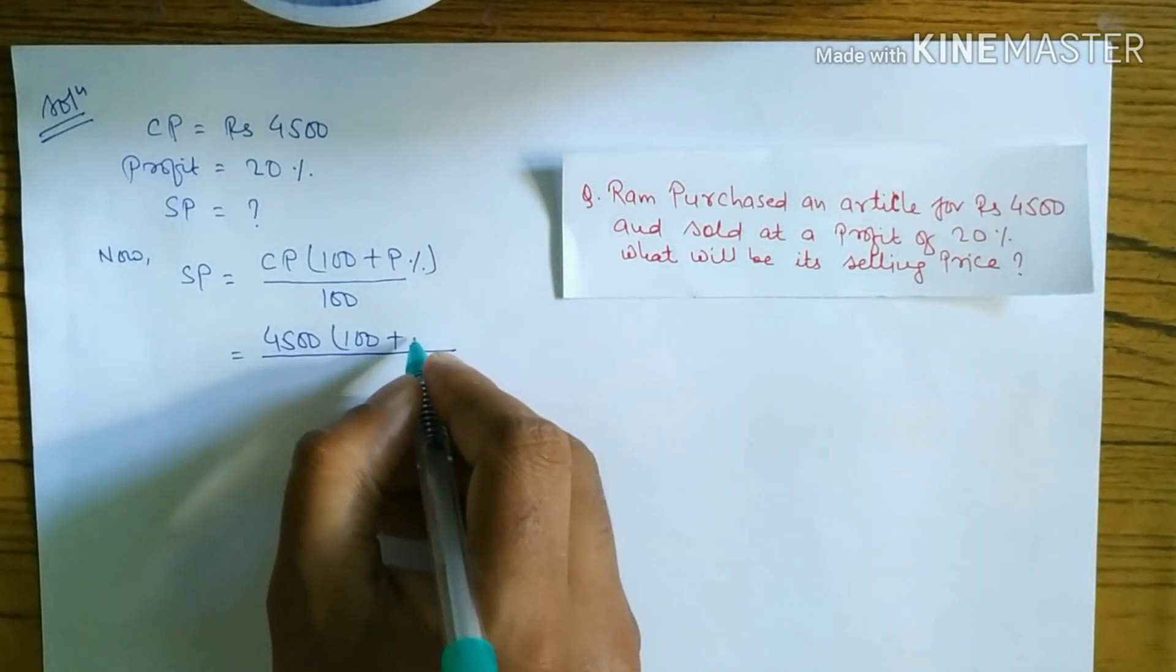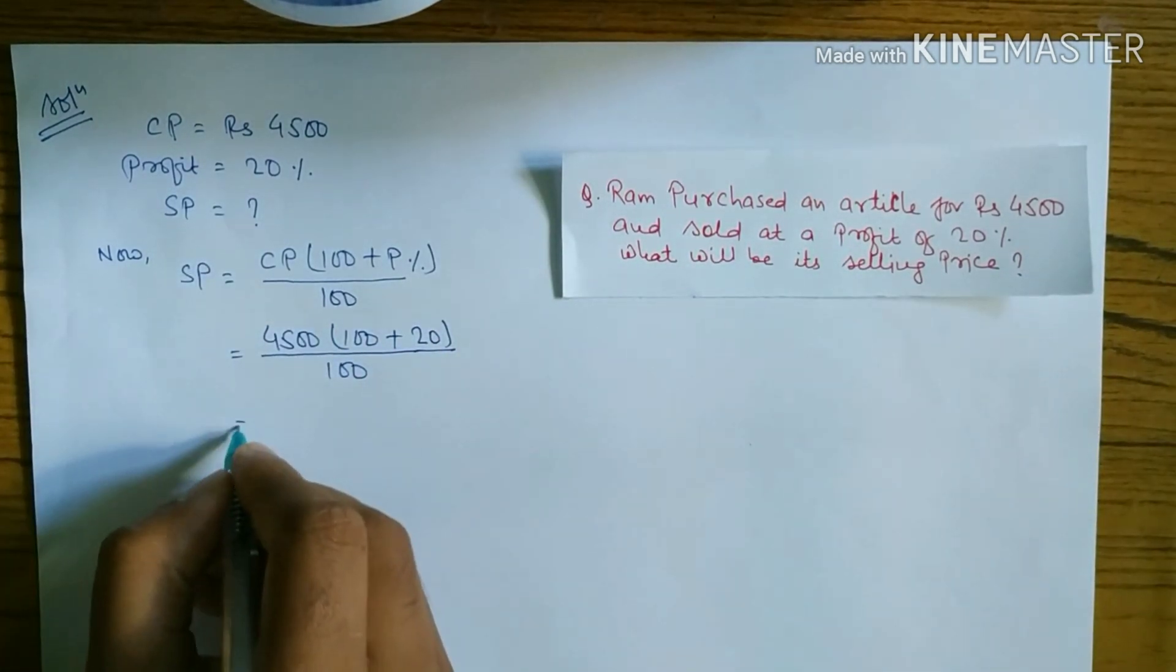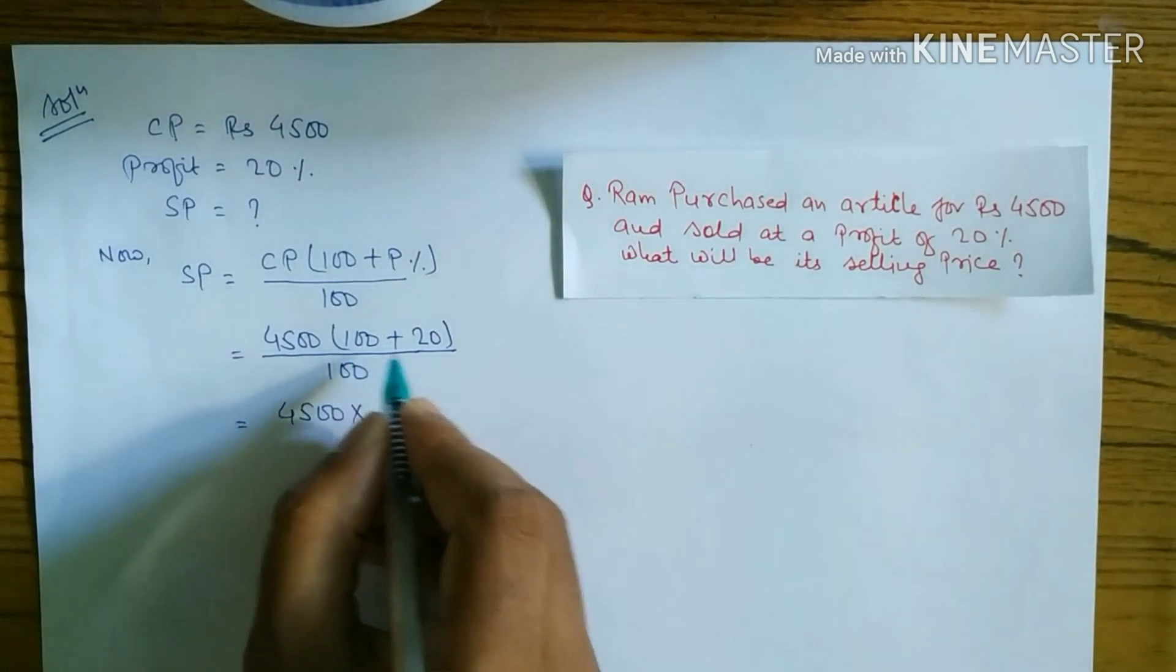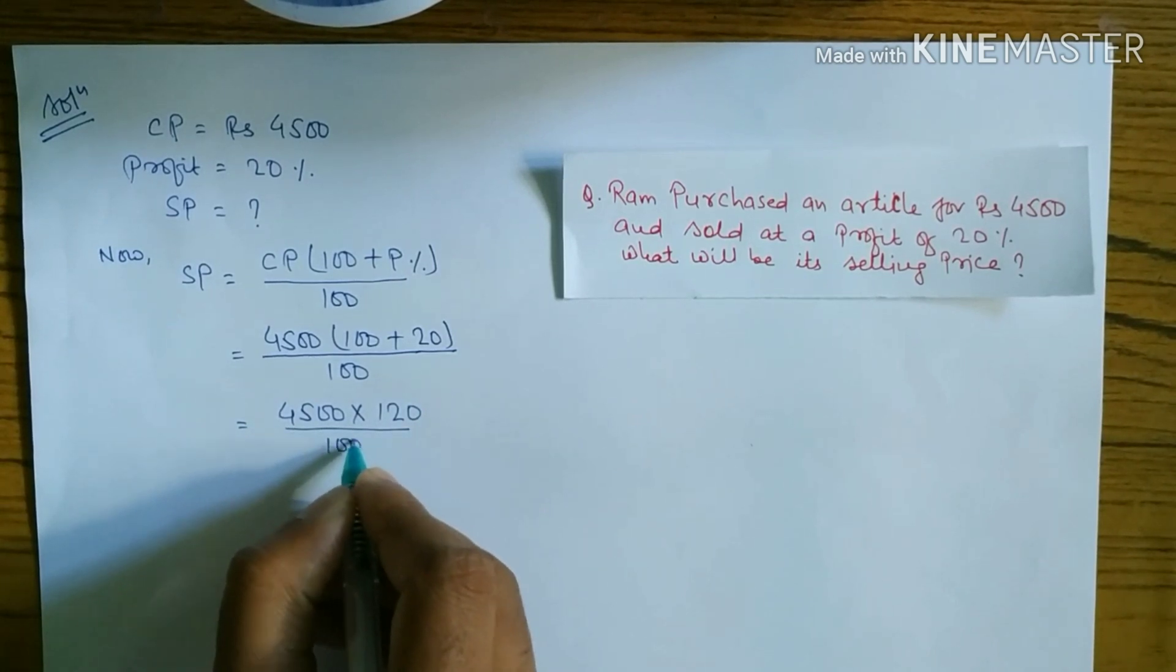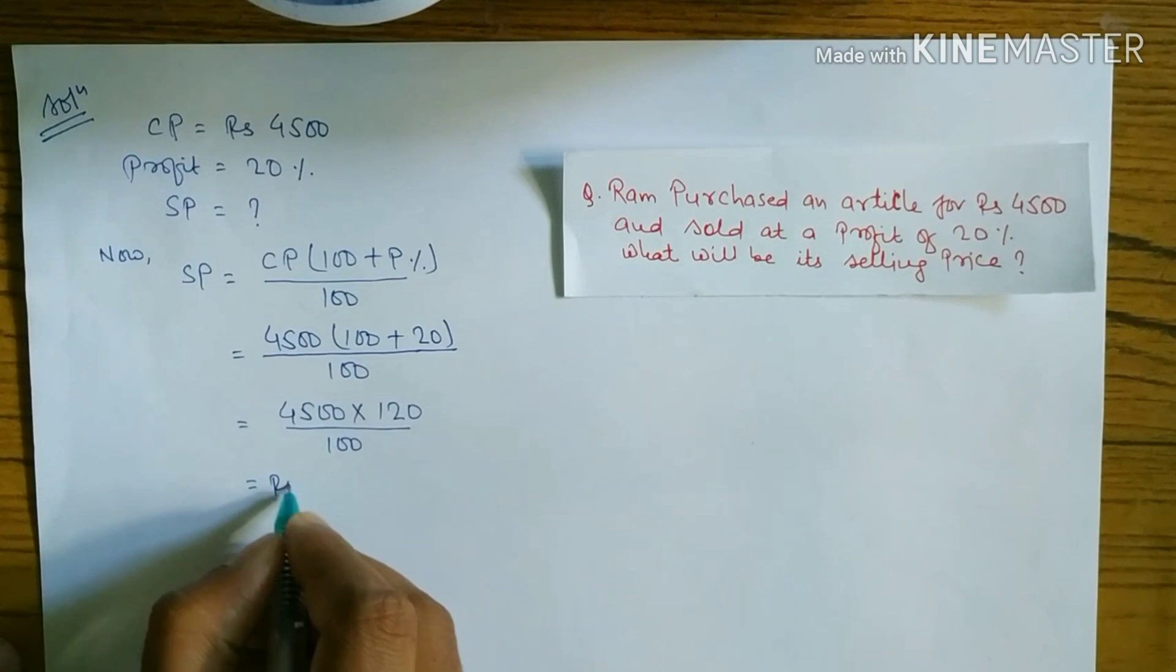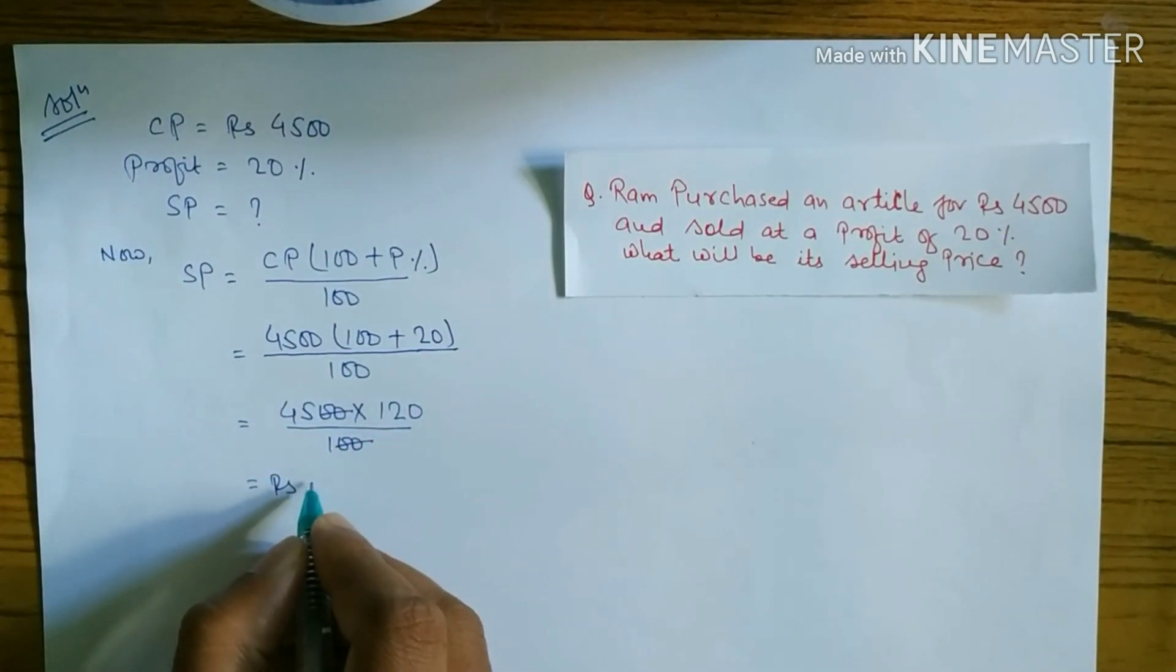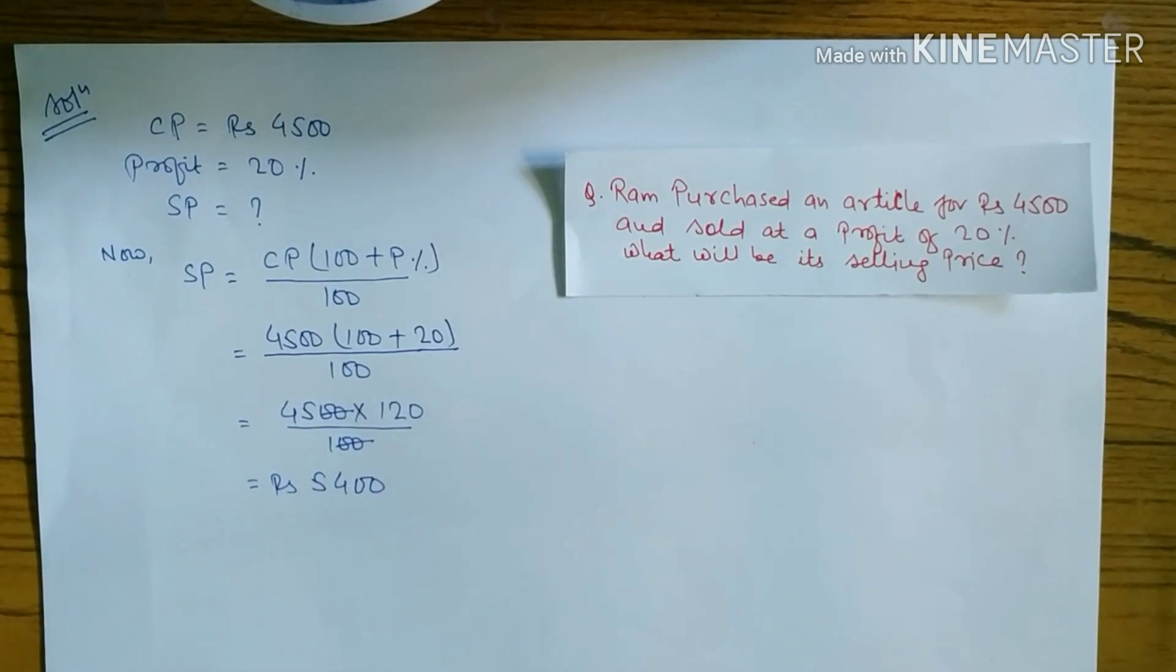Value of CP is equal to 4500. Profit percent is equal to 20 percent, so we have to write here 20. 4500 into (100 plus 20) which is 120, divided by 100. We have to calculate 45 into 120. Canceling zeros, 45 into 120 is equal to 5,400. So selling price is equal to 5,400.